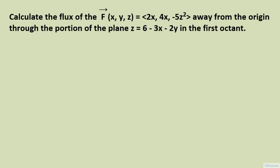In this exercise, we calculate the flux of the vector field capital F, whose components are 2x, 4x, and minus 5z squared, away from the origin, through the portion of the plane z equals 6 minus 3x minus 2y in the first octant.